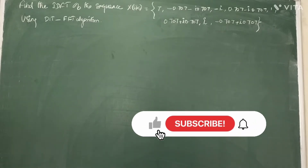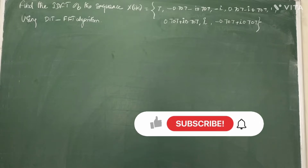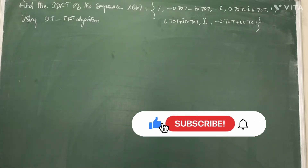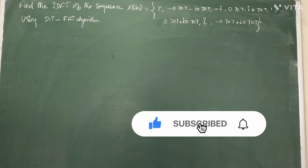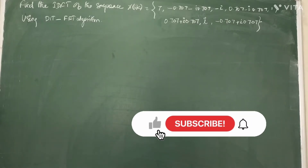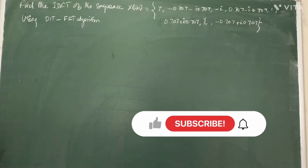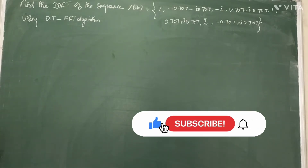In the last class we saw how to compute DFT for a given sequence using the DIT-FFT algorithm. In this class we are going to see how to take IDFT for a given sequence using the DIT-FFT algorithm. The difference between DFT and IDFT is that in the case of the inverse discrete Fourier transform, we have to take the conjugate of the twiddle factor. The remaining procedure is the same.